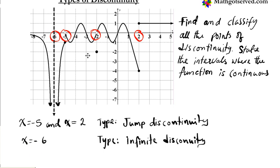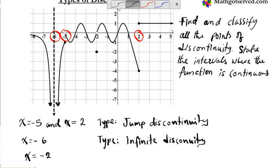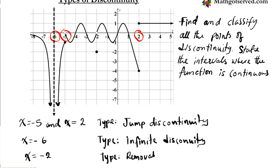Last but not least, at x equals negative 2, this kind of discontinuity is interesting because it's one that can actually be taken care of — it can actually be filled. If I move this point up right here, the discontinuity is gone. That kind of discontinuity is known as removable or point discontinuity. Whenever you have an open point on a graph like this, a break like that, the type is called removable or point discontinuity.